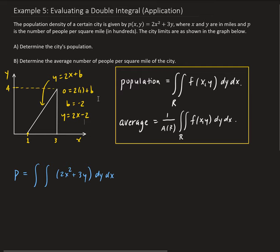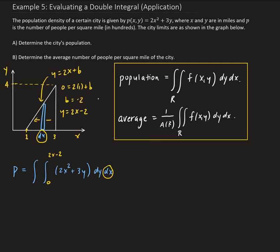We're going to use a vertical representative piece. The dx will be on the outside. For the inner bounds, they go from 0 to 2x − 2. Then for the outer bounds, this rectangle goes between x = 1 and x = 3. So that's the setup for the integral.